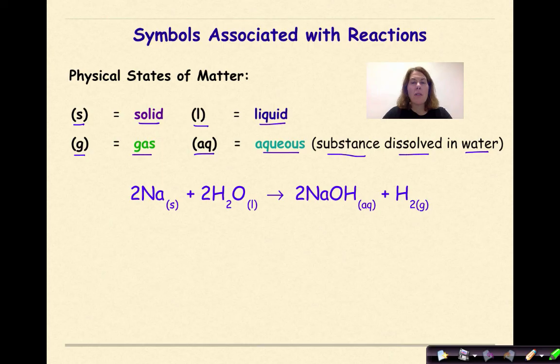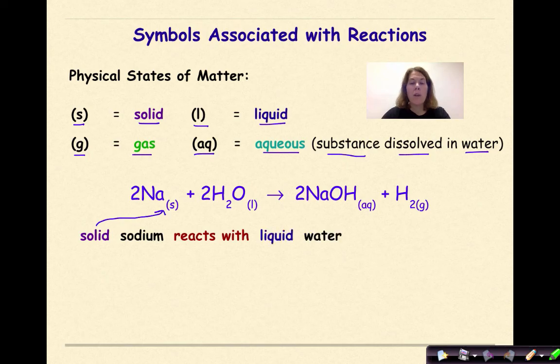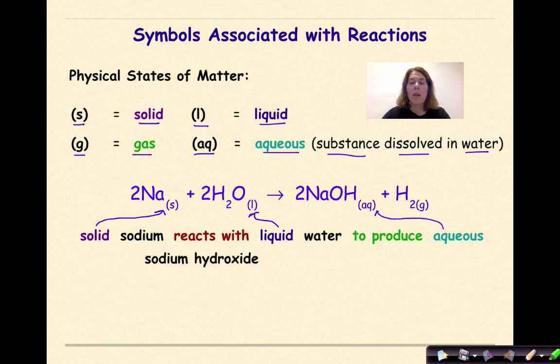Let's add in our physical states to our chemical equation. Let's start with solid sodium, so the solid is now coming from that little s right there, reacts with liquid water, so the liquid is being represented by the little l, to produce aqueous sodium hydroxide, so that aqueous is represented as that little aq symbol there, and hydrogen gas, and the gas is represented by the little g. And that is how we would represent physical states in our chemical equation.